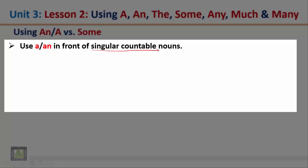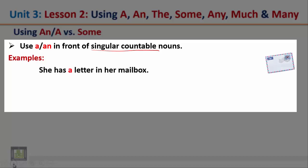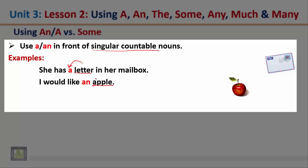We use a or an with singular countable nouns. Examples: she has a letter in her mailbox — the word 'letter' is a singular countable noun, so it is preceded by a. Another example: I would like an apple. The word 'apple' is a singular countable noun that starts with the vowel a, so we use an.